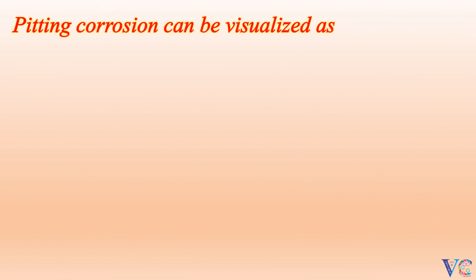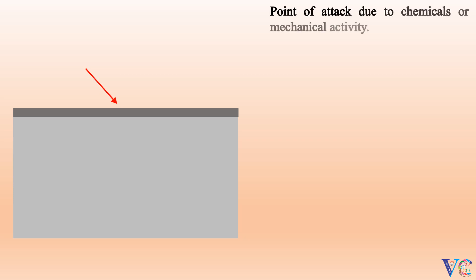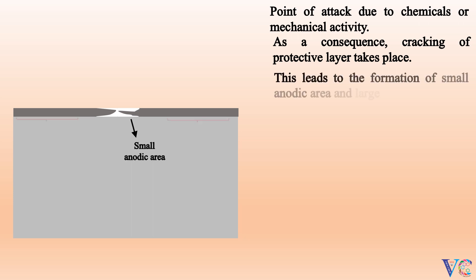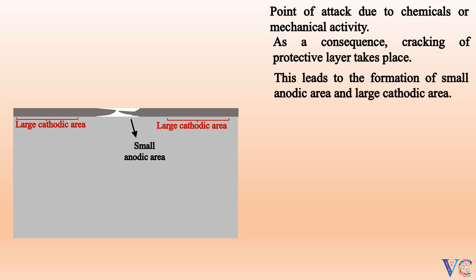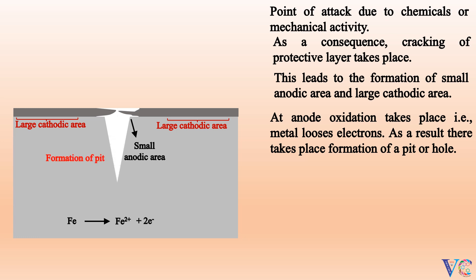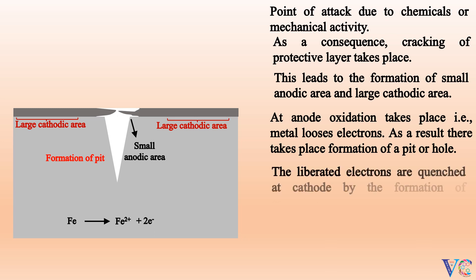Pitting corrosion can be visualized as follows: the base metal has a protective coating. At the point of attack due to chemicals or mechanical activity, cracking of the protective layer takes place. This leads to the formation of a small anodic area and large cathodic area. At the anode, oxidation takes place — that is, the metal loses electrons — resulting in the formation of a pit or hole. The liberated electrons are quenched at the cathode by the formation of corrosion product.